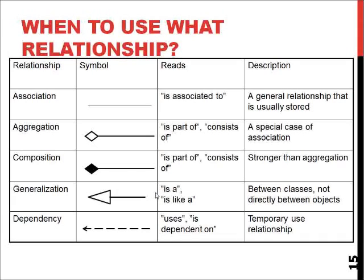To summarize: association is just a general relationship. Aggregation and composition mean one is part of another, and we can consider them the same type of relationship, since their difference is really dependent on the programming language and platform being used.